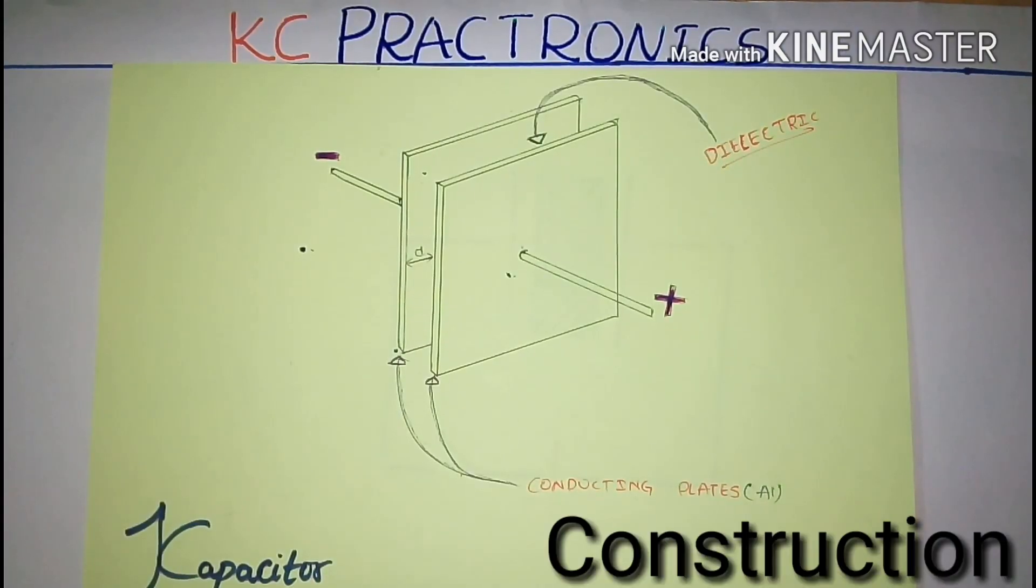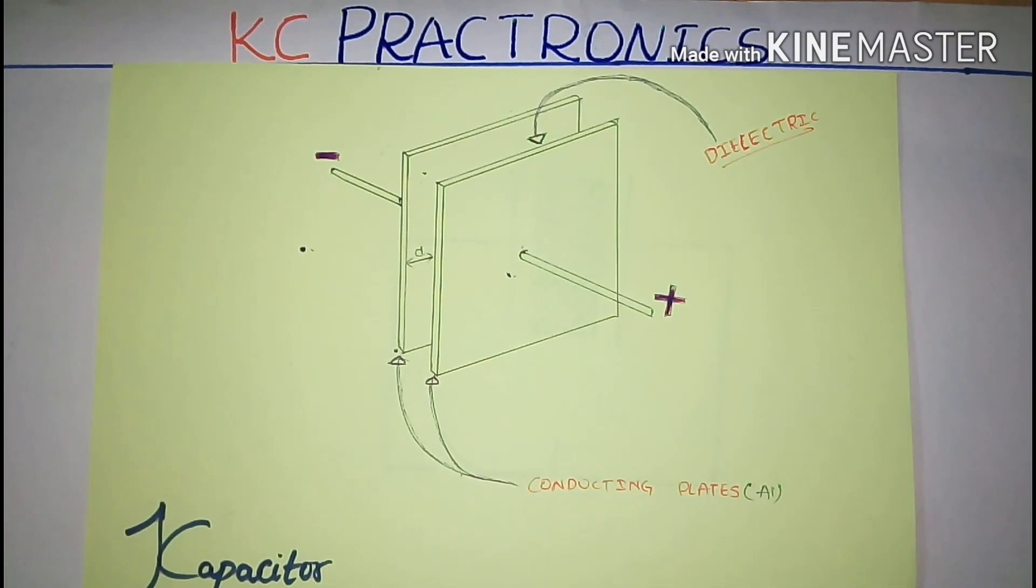A capacitor consists of two metal plates made up of aluminum, separated by a dielectric. The dielectric may be made up of mica, glass, or cork.